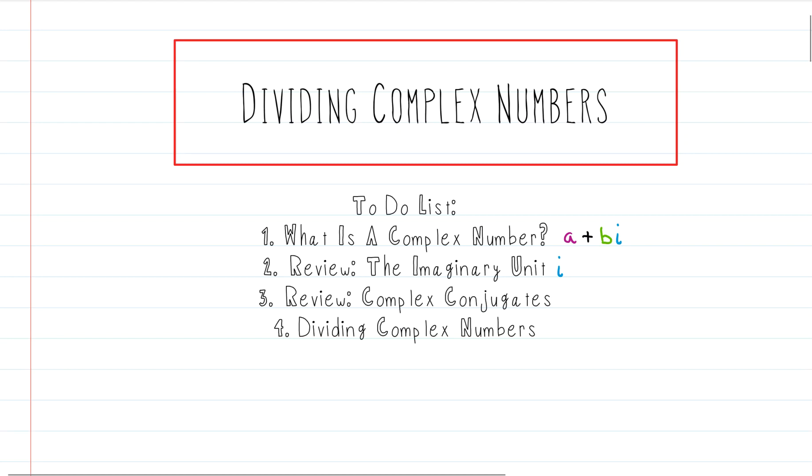And here's our to-do list. First we'll start off with a definition of complex number, a plus bi form. I'll show you what that is. And then we'll talk about a quick review of the imaginary unit i and complex conjugates. Because we can't divide complex numbers without having a complex conjugate. And then we'll give an example of dividing complex numbers.